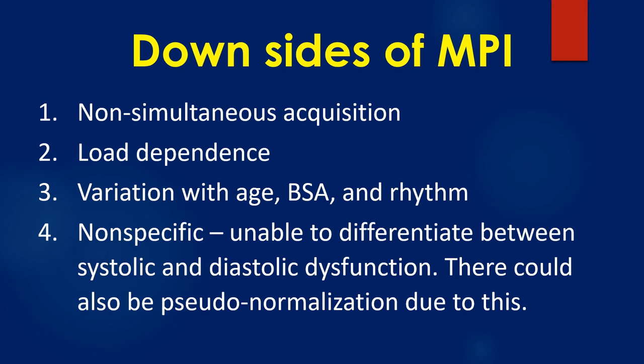Downsides of MPI are: 1) non-simultaneous acquisition, 2) load dependence, 3) variation with age, body surface area, and rhythm, 4) non-specific, and 5) unable to differentiate between systolic and diastolic dysfunction. There could also be pseudo-normalization due to this.